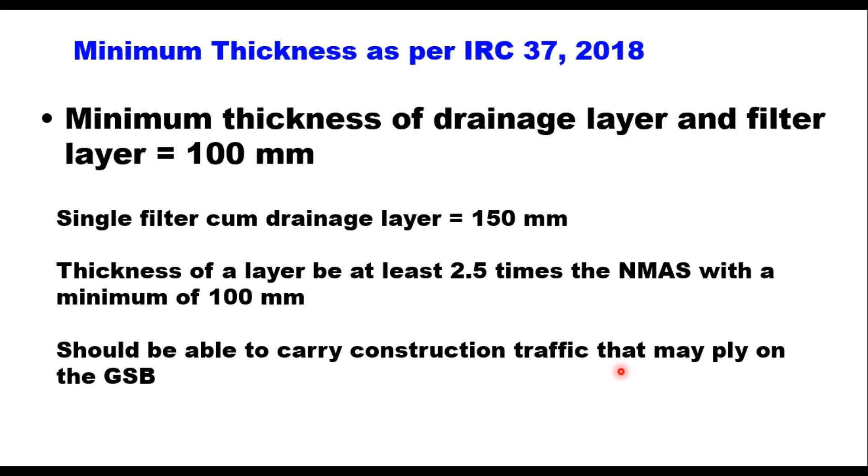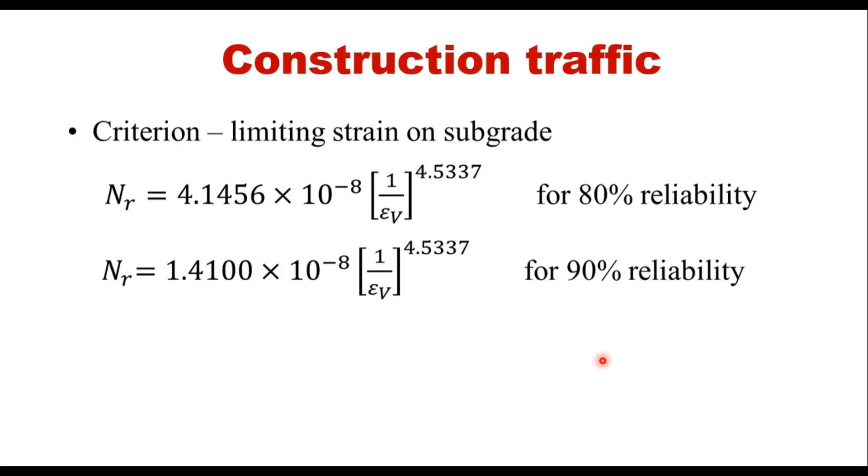Finally, it should be able to carry construction traffic that may apply on the GSB layer. This is important: the thickness of subbase should be such that during construction of base layer, the strain produced by construction traffic on the top of subgrade should not exceed the limiting strain as calculated using rutting equation given in IRC 37. The criteria for limiting the strain on subgrade level as suggested in IRC 37 is given by this equation: Nr, that is the number of operations or repetitions for rutting failure, depends upon the limiting strain.